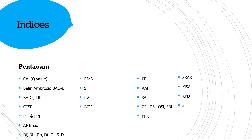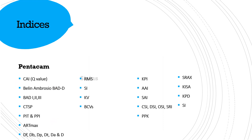These are the Pentacam indices: BAD, D123, CTSP, PIT, Artmax, DF, DB, DT, DA, and Total D. Then we have a list of Cirrus indices, a list of Galilei indices, and some general indices which are not specific to any machine.